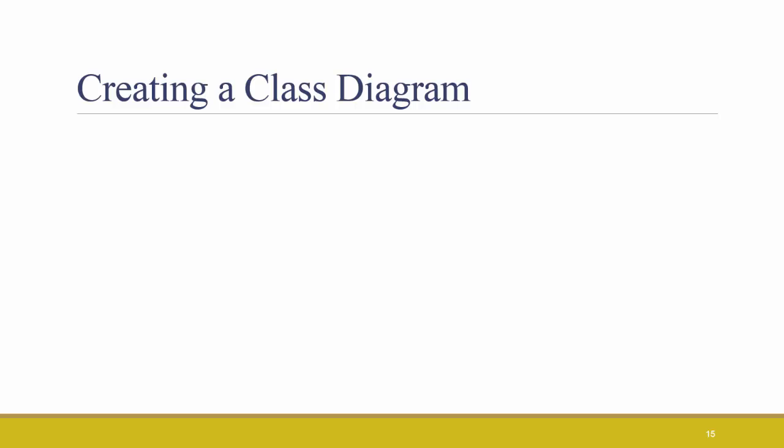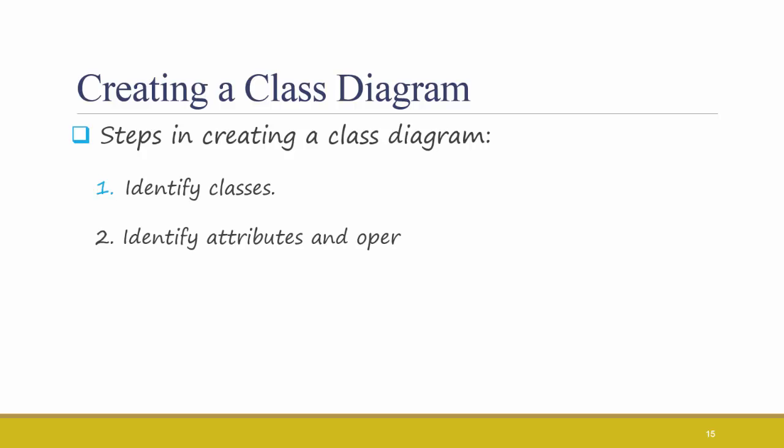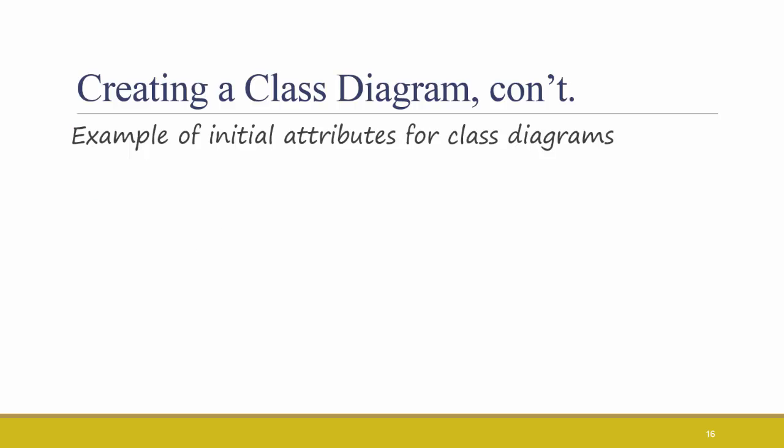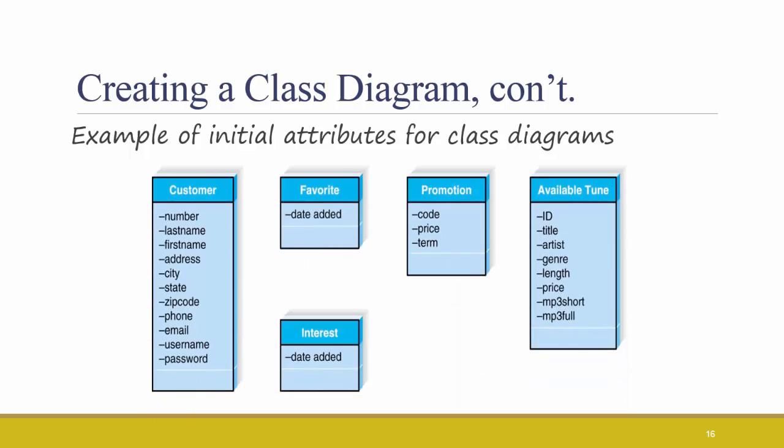To create a class diagram, use some of the same steps that we use when creating ER diagrams in the structured approach. First, identify what classes you need to store information about. Identify their attributes as well as their operations. Then draw your associations between the classes. Here's an example of some initial attributes for class diagrams. Again, these should look very familiar.